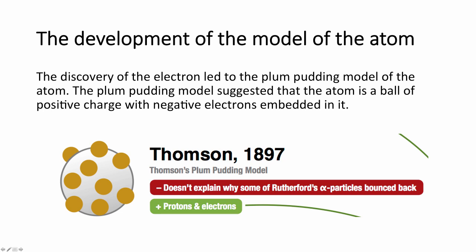Then came the discovery of the electron. J.J. Thompson theorised that atoms were like plum puddings — the plums inside the pudding were the newly discovered electrons, and the pudding, the rest of the material, was the positive charge. He theorised that the electrons were randomly distributed within the atom, like plums in a pudding. He didn't know about a nucleus; he thought all of the rest was the positive charge. So he didn't explain Rutherford's alpha scattering experiment, but he was able to talk about positive and negative charge in an atom.